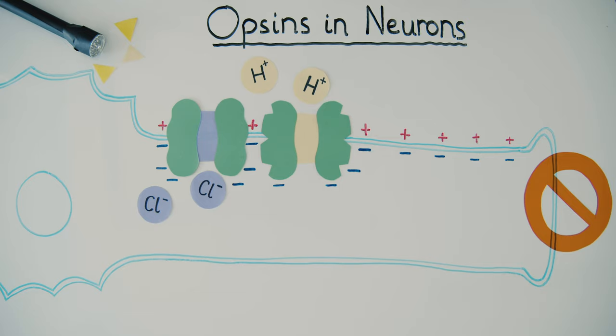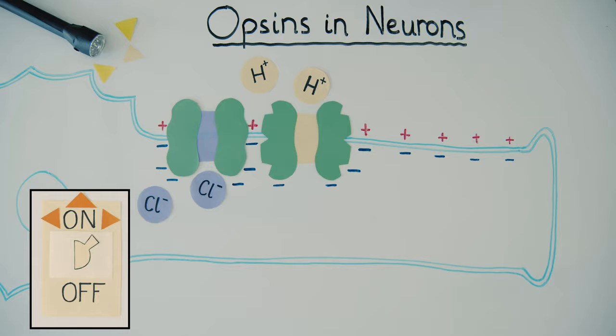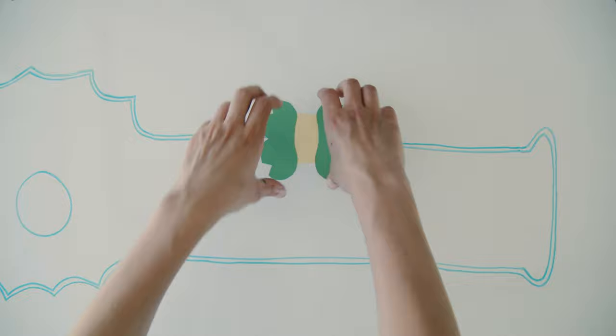Through this process, opsins convert light into electrical gradients and effectively act as light-evoked on or off switches for neuronal firing.